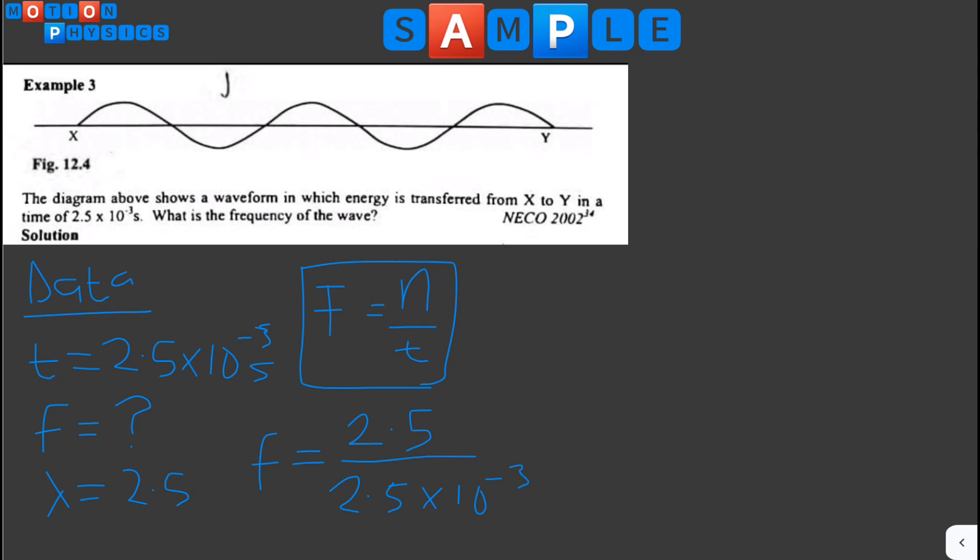If I punch this into my calculator, I arrive at F equals 1.0 times 10 raised to the power of 3 hertz. Always remember to put down your units in physics—it's very essential. And this is how to crack this question.